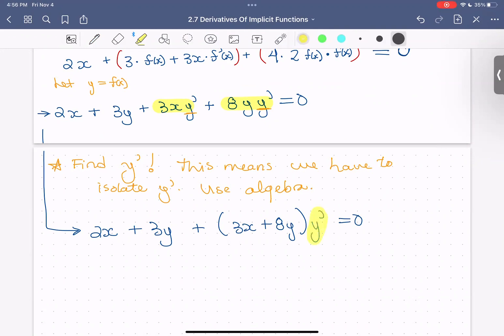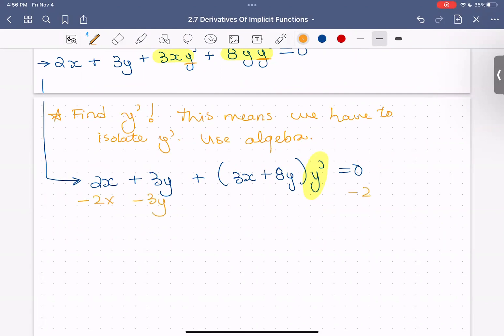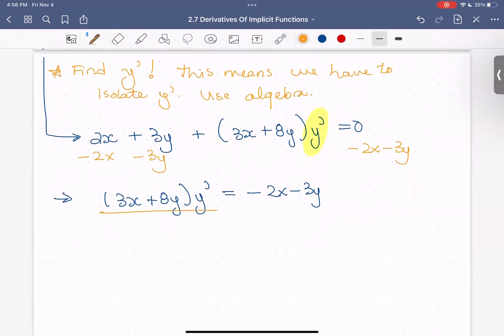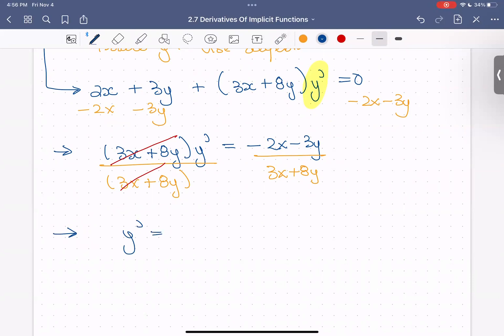So do we see how we did that? And the reason is that's helping to gather all the y primes together. So when we isolate, first step is gather all the y primes together, and then try to remove everything or put everything to the other side. So what we can do is subtract 2x and 3y from both sides. So that just becomes now we just have 3x plus 8y on the right hand side times y prime equals negative 2x minus 3y. And then now we need to get rid of this term in front of the y prime, so I'm going to divide both sides by that 3x plus 8y. So now that left hand side cancels, and we're just left with y prime equals negative 2x minus 3y all over 3x plus 8y.